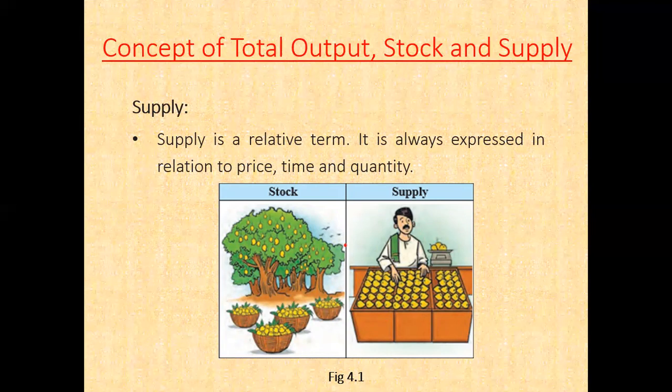See figure number 4.1. The first part of the figure shows the total quantity of mangoes available with a seller or farmer to sell at a particular point of time — this is known as stock. The second part shows the actual quantity of mangoes which the seller is willing and able to offer for sale at a given price during a certain period of time — this is known as supply.